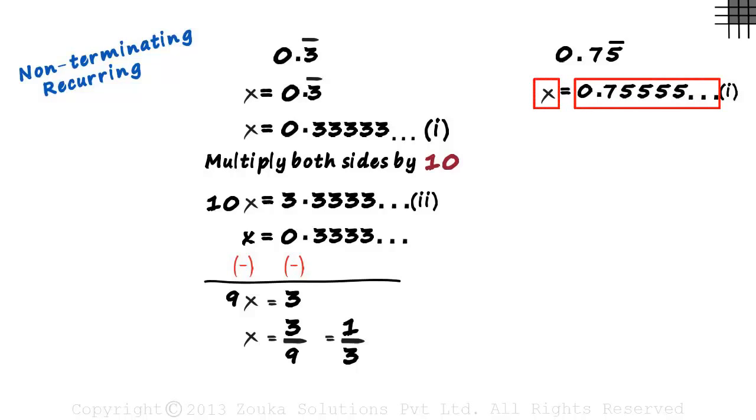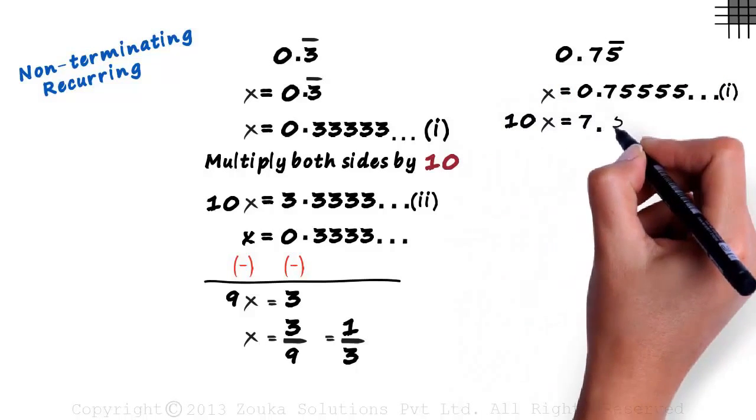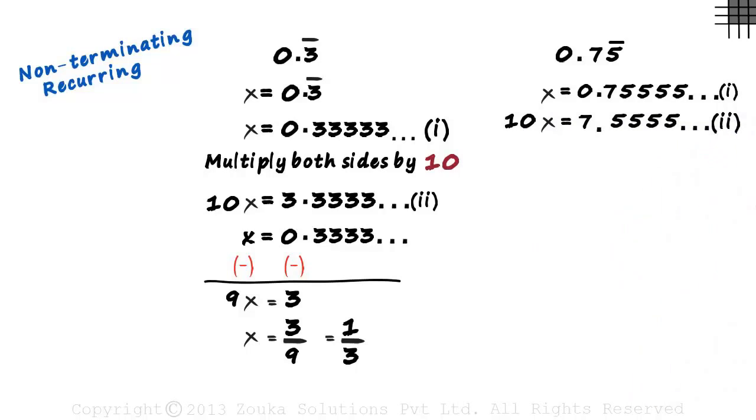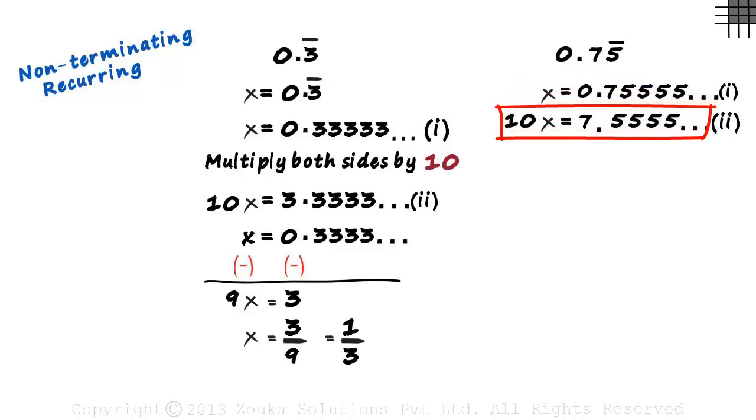Let's multiply both sides of the first equation by 10. That gives us 10x equals 7.5555 and so on. Let this be our second equation. Now tax your brain a little. If we subtract this from this, will we eliminate 555 and so on? The only way that can happen is if we have two equations which have just the recurring part after the decimal. Like in the previous example, we had 3333 after the decimal point. How do we manage to get a 5555 after the decimal point in two equations here?